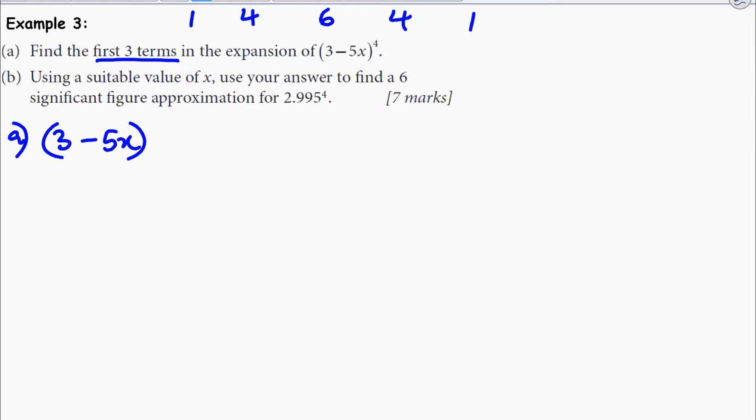(3 - 5x)^4 will be equal to 3^4 + 4(3^3)(-5x) + 6(3^2)(-5x)^2 plus whatever comes next.